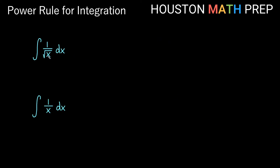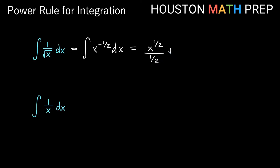The integral of one over square root x dx. This is a reciprocal and also a one-half power in the root, so this is really the antiderivative of x to the negative one-half dx. Applying the power rule, we add one to negative one-half, giving us positive one-half. Dividing by that new power of positive one-half, we multiply by the reciprocal instead — that becomes times two on the outside. And x to the one-half is just square root x, so the answer is two root x plus c.